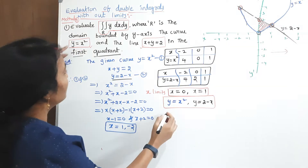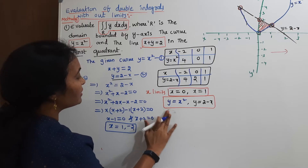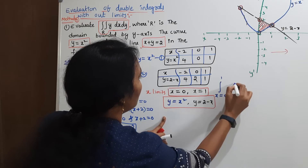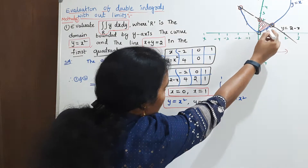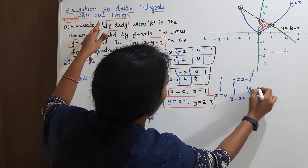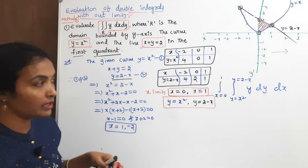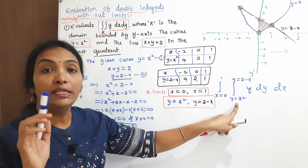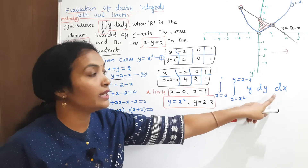Now we are going to evaluate the given double integral. The x limits are 0 to 1. The y limits: lower limit is x squared (the lower curve) and upper limit is 2 minus x (the line). The given integrand is y dy dx. We integrate with respect to y first, because the x limits are constant and y limits are in terms of x.